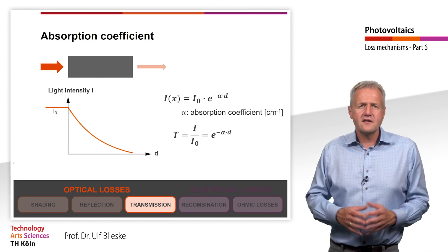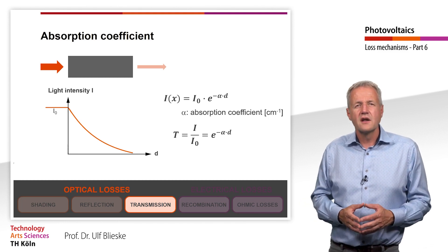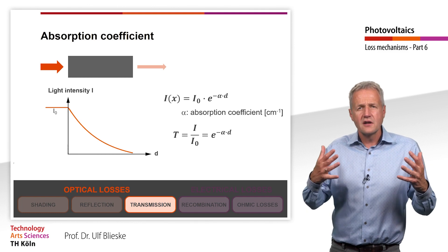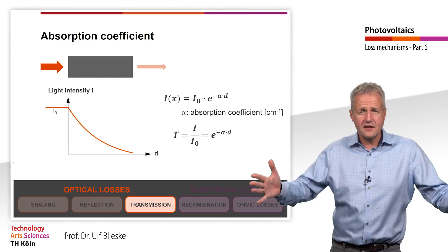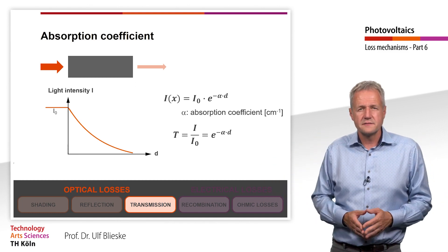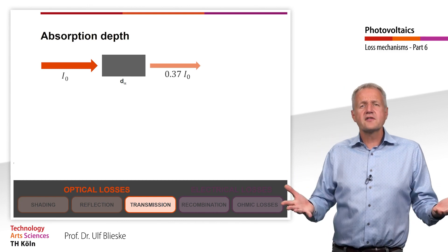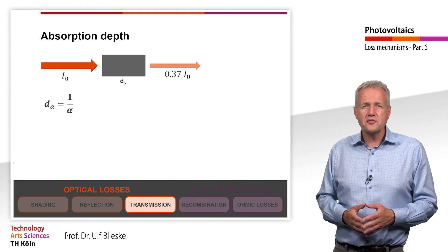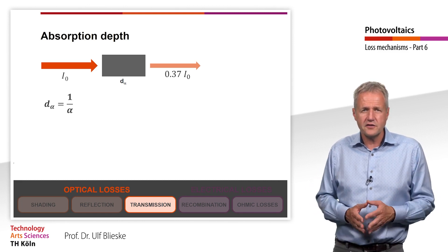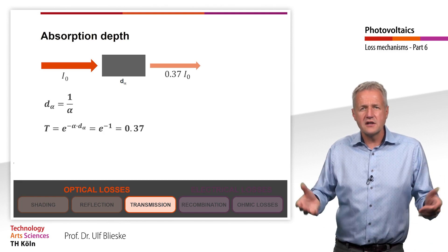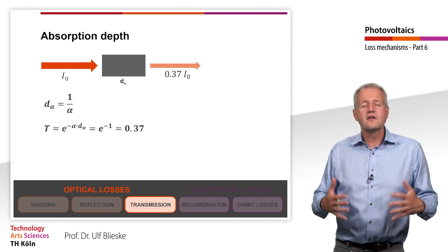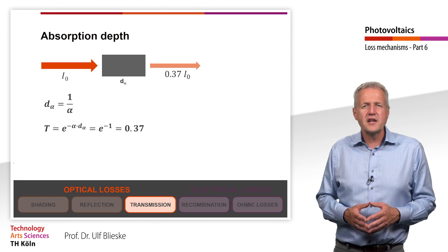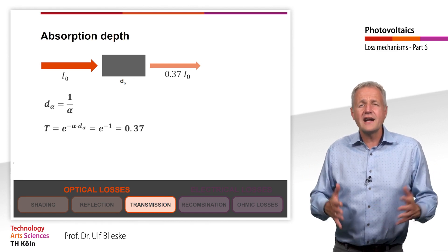According to this equation, the assumption that every photon with sufficient energy is absorbed only applies if the semiconductor has sufficient thickness or a very large absorption coefficient. The absorption depth can be derived from the absorption coefficient — it is the reciprocal of alpha. If you insert the absorption depth (1/alpha) into the transmittance equation, the transmission for a material of that thickness is exactly 1/e, or 37%. The absorption depth is an important parameter as it indicates how thick the solar cell must be for a large part of the radiation to be absorbed.